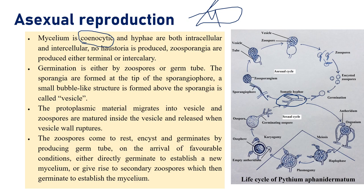The sporangiophore is a stalk-like structure that bears a sac-like or head-like structure called the sporangium. A special character of Pythium: it cannot produce zoospores directly inside the sporangium. Instead, it produces a specialized structure above the sporangium called a vesicle. The protoplasm from the sporangium moves into the vesicle, where compartmentalization occurs and zoospore production takes place in the vesicle. When protoplasm is in the sporangium no compartmentalization happens; only after it moves to the vesicle are zoospores formed and released.